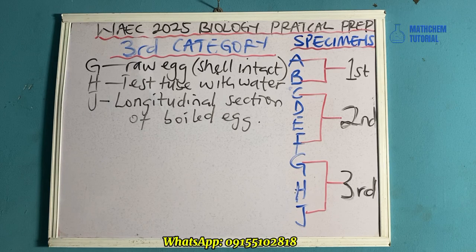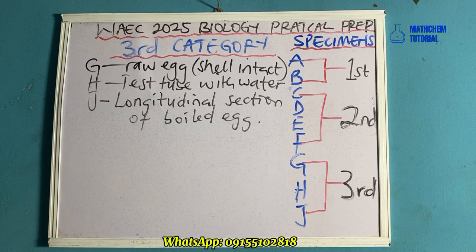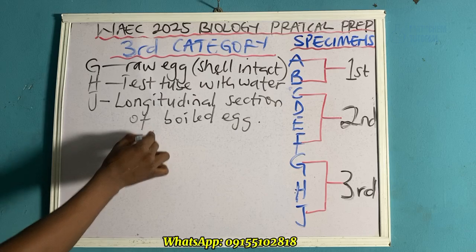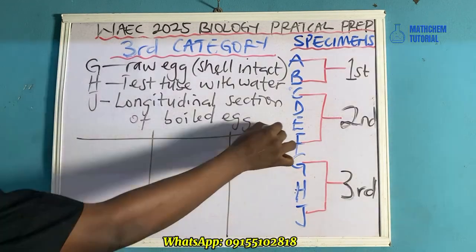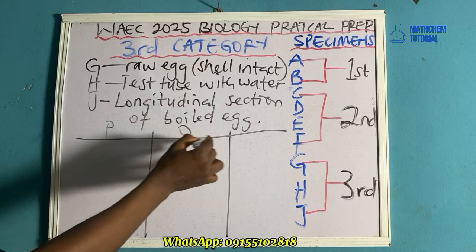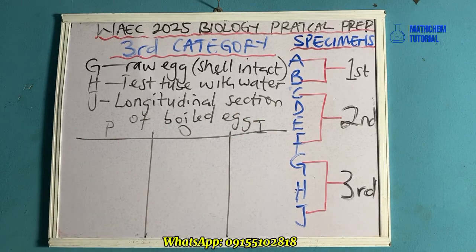Another possible question is that they can ask you to carry out the protein test on the white portion of specimen J. The things they can ask you to do while carrying out the protein test: state the procedure, record the observation, and write your inference. This can be presented in a tabular form, with columns for procedure, observation, and inference.